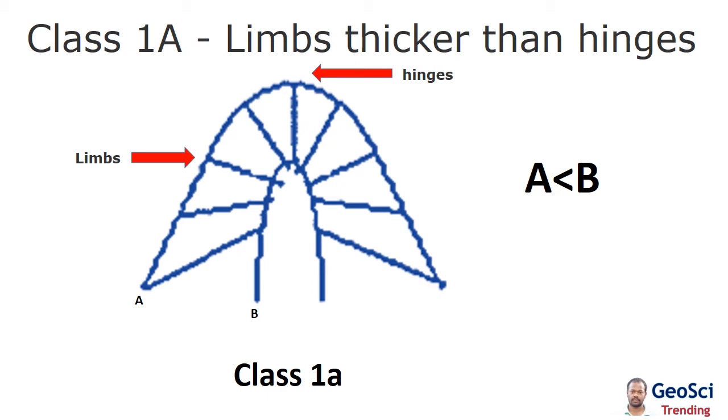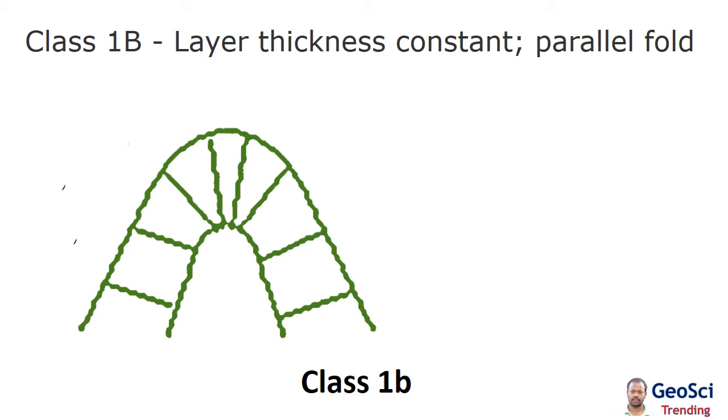Class 1a has limbs thicker than hinges. Class 1b has layer thickness that is constant and parallel fold, where layer A and layer B are equal, so they are called parallel folds. Class 1b and Class 2 folds are most common in the field.